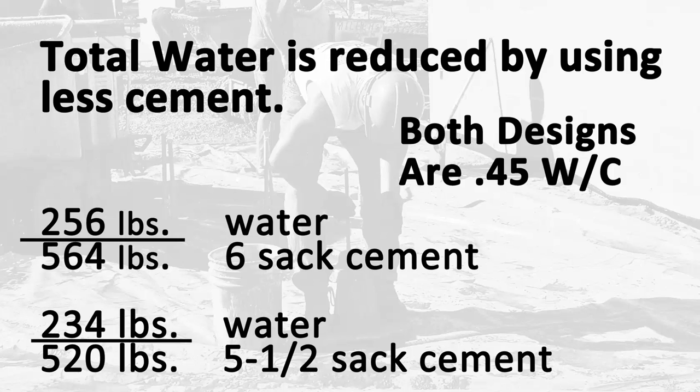To illustrate the principle of total water content, two mix designs are shown in this illustration. Both mixes are 0.45 water-cement ratios, but the top one uses six-sack cement, and the bottom uses five-and-a-half sack. There is 22 pounds more water in the six-sack concrete.